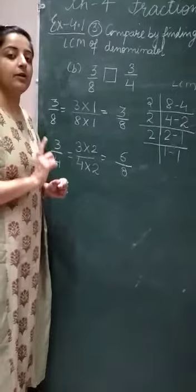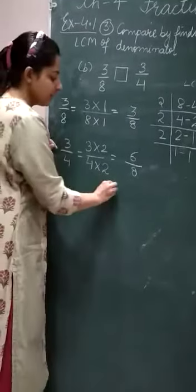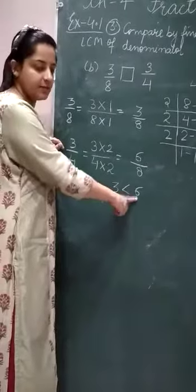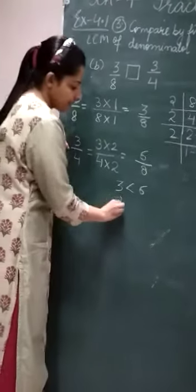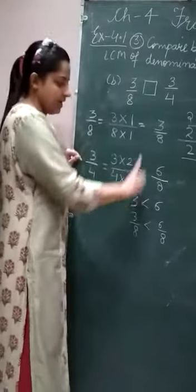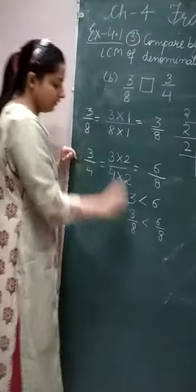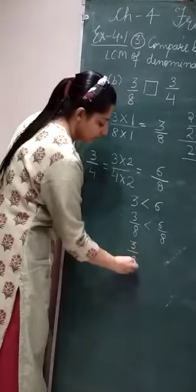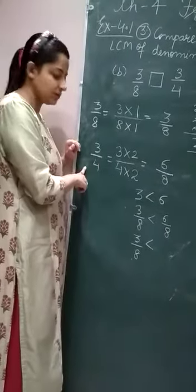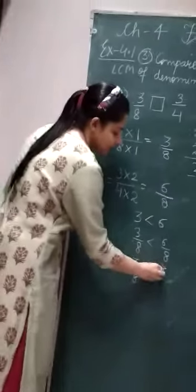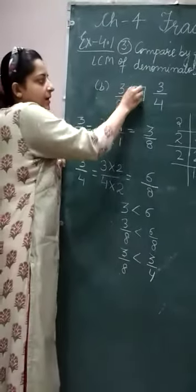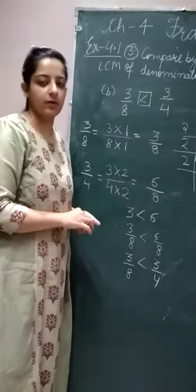Now we compare the numerators. 3 is less than 6, so 3/8 is less than 6/8. The equivalent fraction corresponding to 6/8 is 3/4. Therefore, 3/8 is less than 3/4. In this way, you can do the comparison.